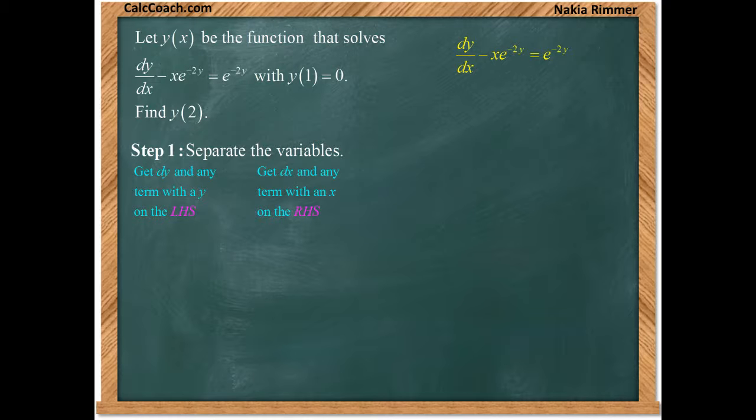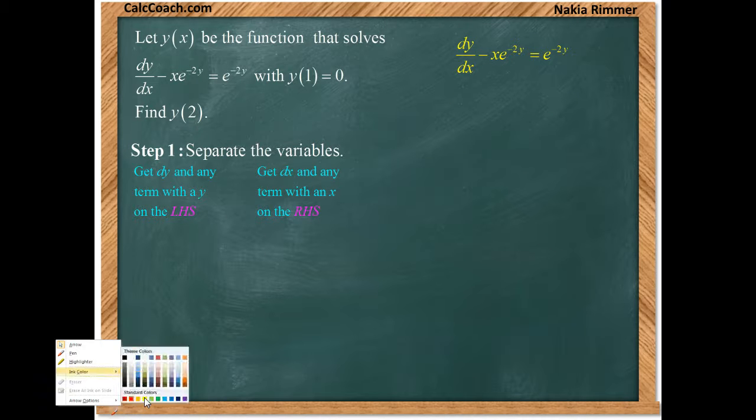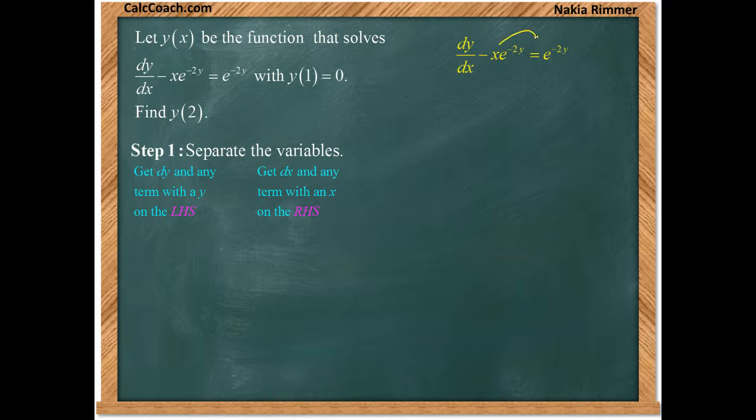So there's terms that need to move. Let's ship this term negative xe to the negative 2y over to the right hand side by adding it over. And then we have to recognize on the right hand side that both of these terms have this e to the negative 2y. So let's factor it out.